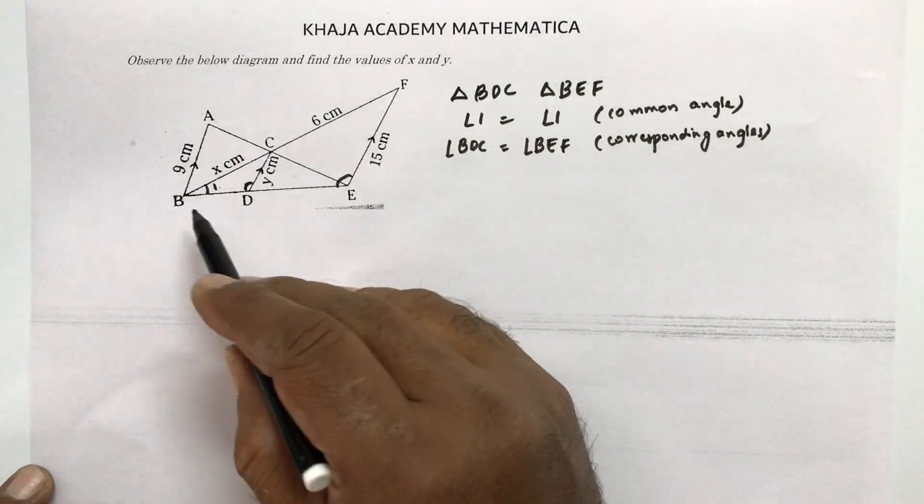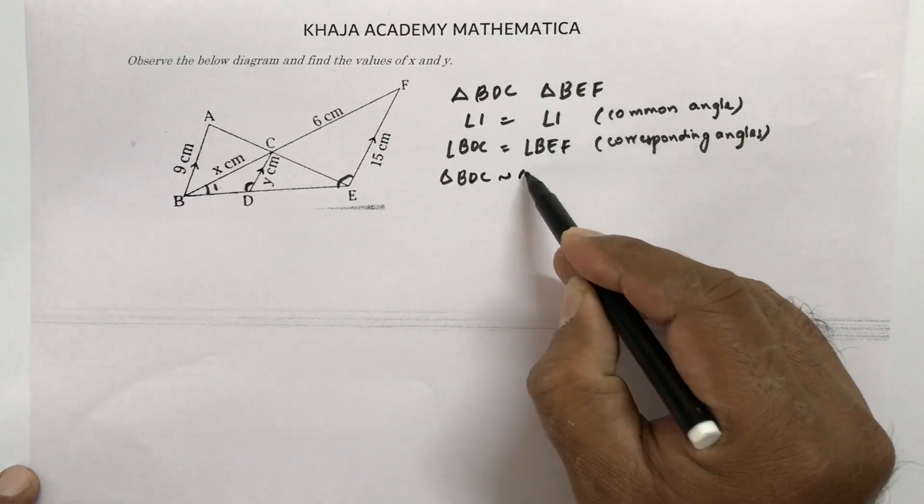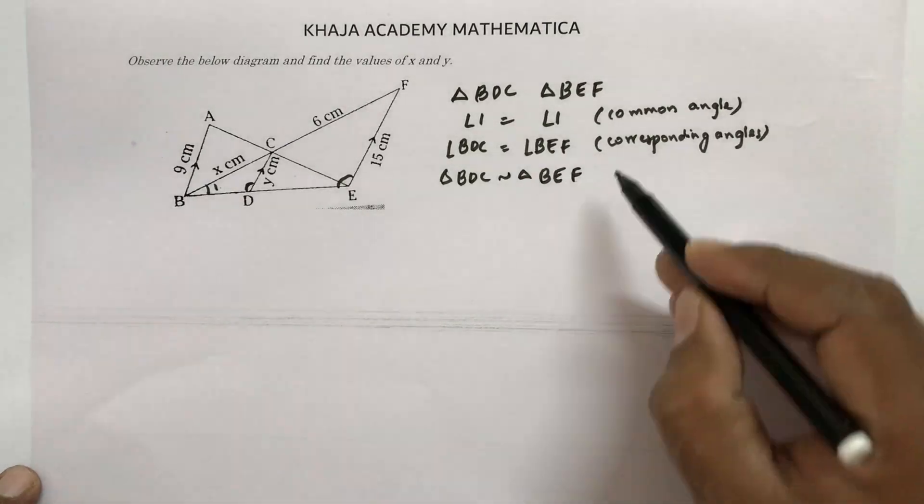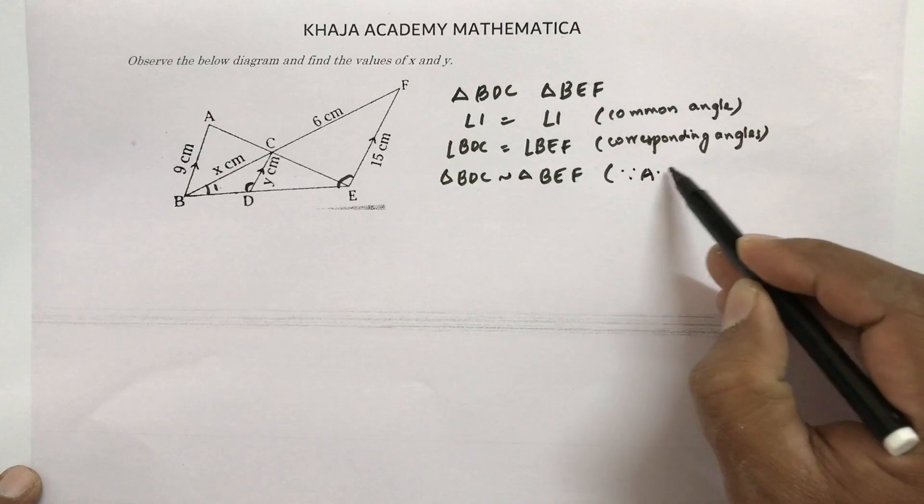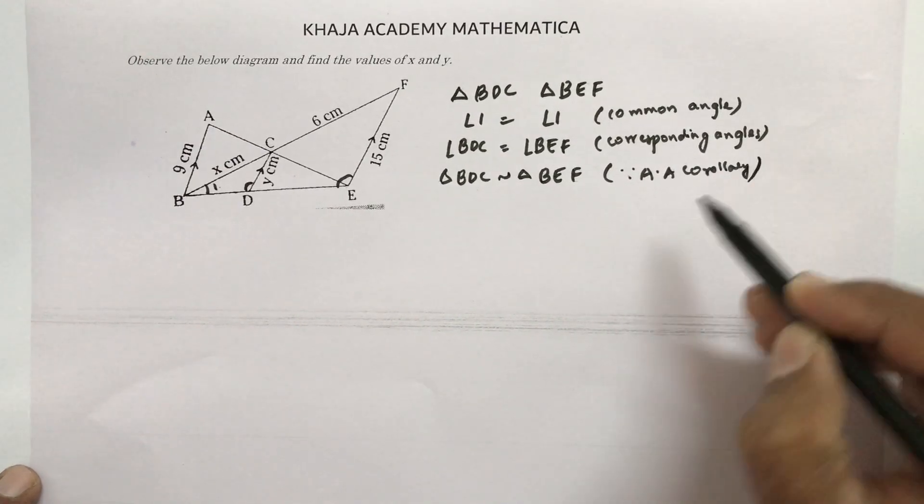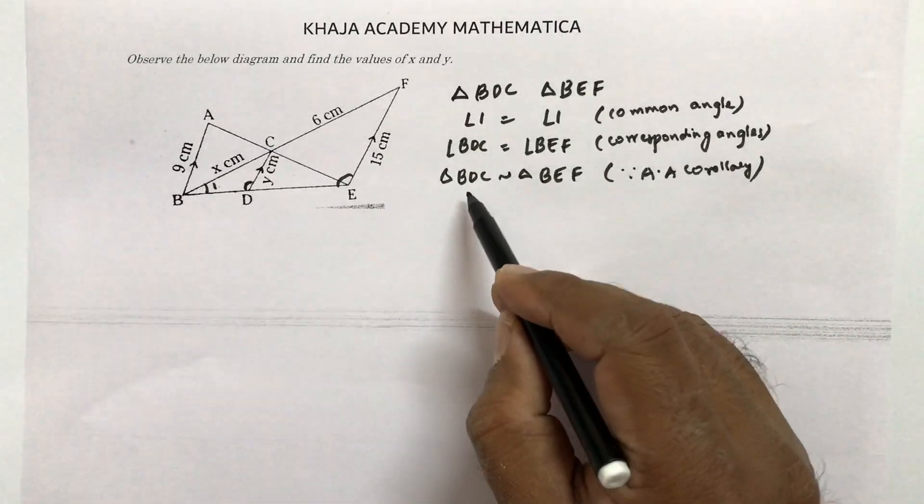So now triangle BDC is similar to triangle BEF. So if the triangles are similar, by CPST we can write the sides are proportional.